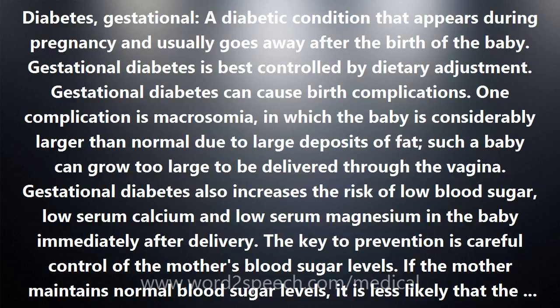One complication is macrosomia, in which the baby is considerably larger than normal due to large deposits of fat. Such a baby can grow too large to be delivered through the vagina. Gestational diabetes also increases the risk of low blood sugar, low serum calcium and low serum magnesium in the baby immediately after delivery.